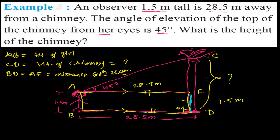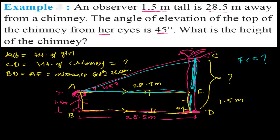We need to find CD, and we already know FD. So we need to find FC first. To find FC, let's look at this right-angle triangle. We know the base value is 28.5 meters and we know the angle. In a right-angle triangle, if you know one side and one angle, you can find all the remaining sides and angles.